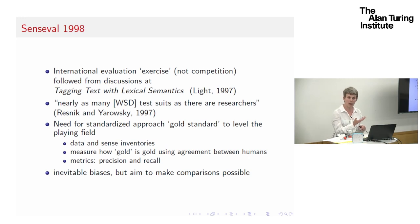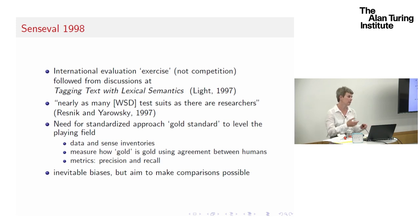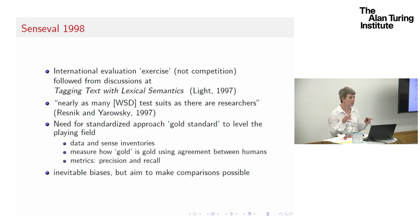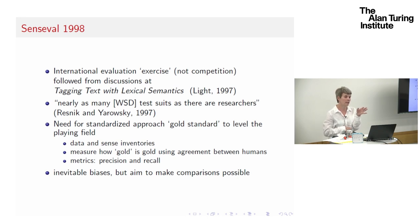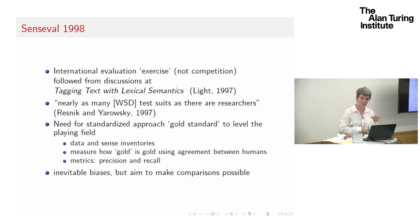So that was where we were in 1998. The idea — which seems obvious now — was to create a standard approach, a gold standard, to level the playing field and make it fairer to compare systems. Choices were made over data and sense inventories. Of course, those choices introduce some biases — you can try to level the playing field but you can never level it completely.